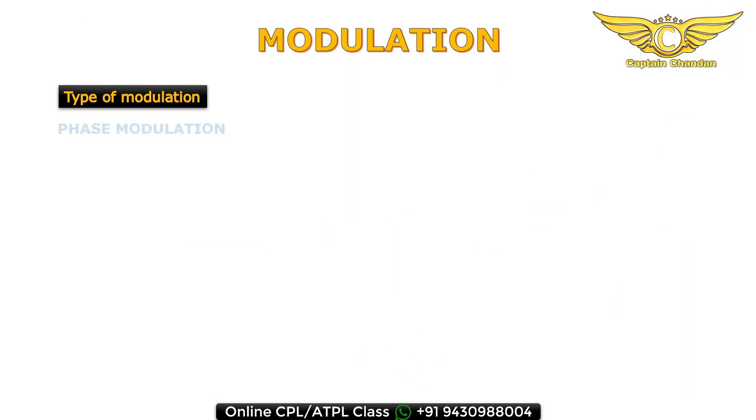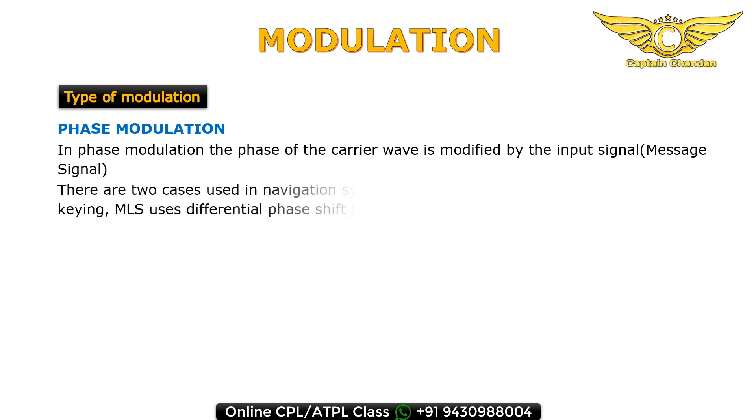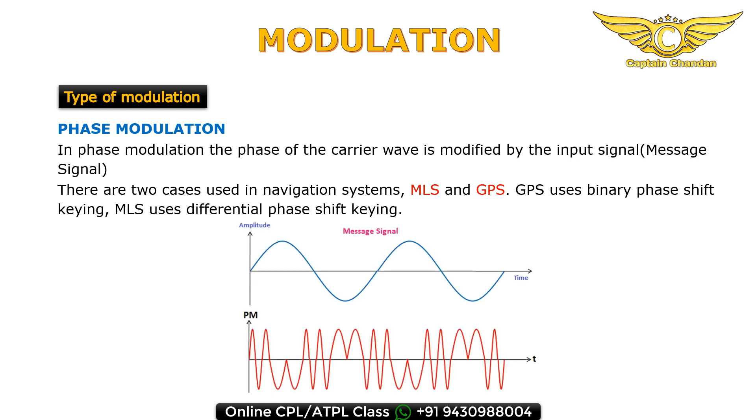Phase modulation: the phase of the carrier wave is changing according to the audio signal or message signal. In MLS, microwave landing system, and GPS we use phase modulation. GPS uses binary phase shifting key and MLS uses differential phase shifting key. You can see in the diagram the phase of the carrier wave changing according to the audio signal.